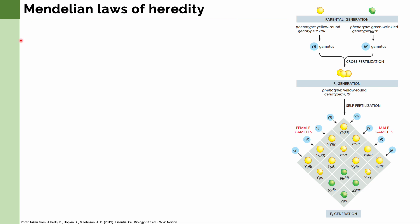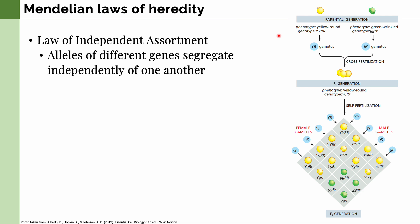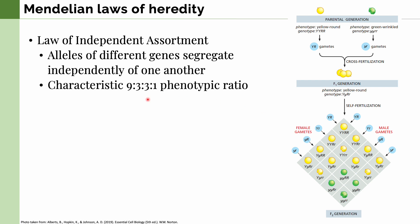Going back to Mendel's laws, the first two laws pertain to inheritance of one allele. But what about multiple alleles being inherited? This leads to Mendel's third law, the law of independent assortment, which states that alleles of different genes segregate independently of one another. In his experiments, he used two true-breeding plants with two alleles each: one with two dominant alleles — yellow pea color and round pea shape — and another with two recessive alleles — green color and wrinkled peas. He crossbred them, took the F1 generation, crossbred it with itself, and produced this Punnett square showing both alleles are independently segregated.